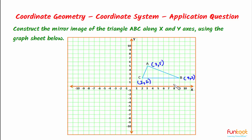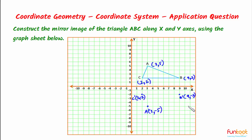Now let's find the mirror image along the X axis. For finding the mirror image of a point along the X axis, the X coordinate remains the same and the Y coordinate becomes negative. So the mirror image of point B is B' (9, -2), mirror image of point C is C' (2, -2), and mirror image of point A is A' (3, -5). We can join these points to form triangle A'B'C', which is the mirror image along the X axis.